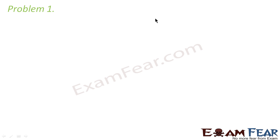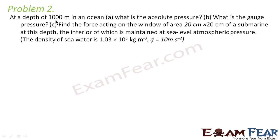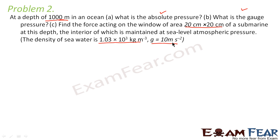Now let us look at a problem. At a depth of 1000 meters in an ocean, what is the absolute pressure? What is the gauge pressure? Find the force acting on the window of area 20 cm by 20 cm of a submarine at this depth, the interior of which is maintained at sea level atmospheric pressure. Density of sea water is 1.03 × 10³ kg/m³ and g = 10 m/s².